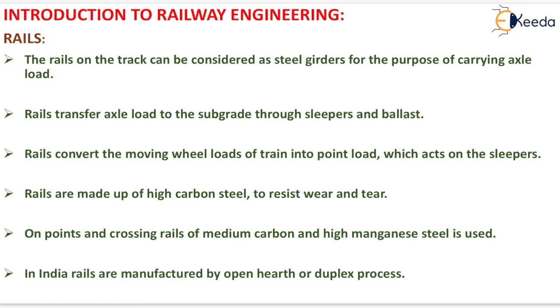On points and crossings, rails of medium carbon and high manganese steel are used. In India, rails are manufactured by the open hearth or duplex process.